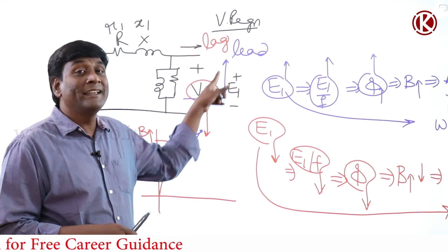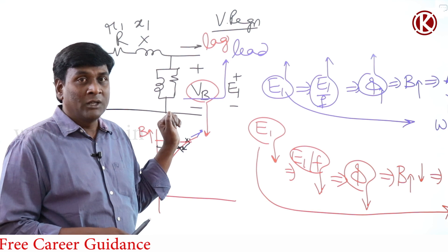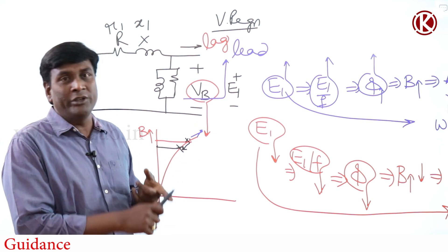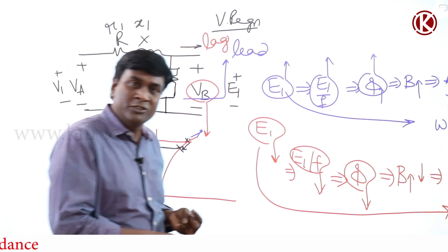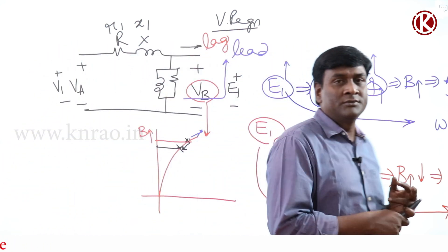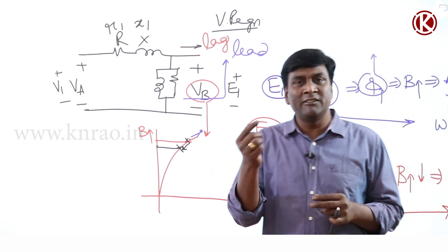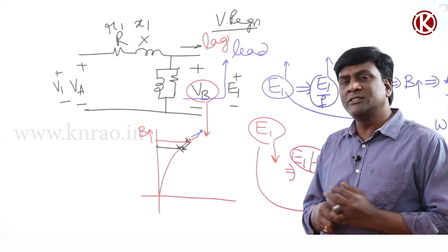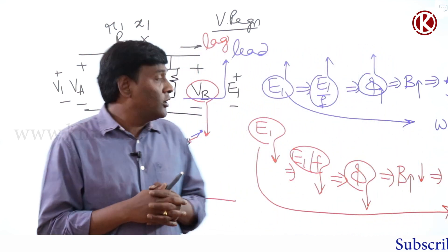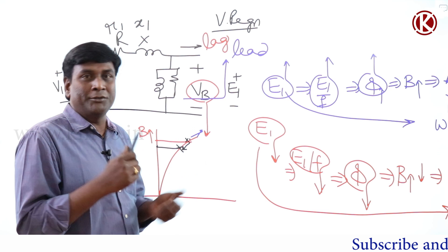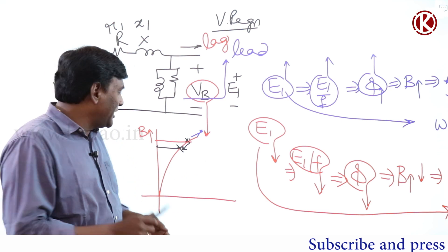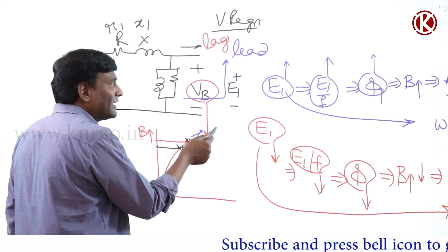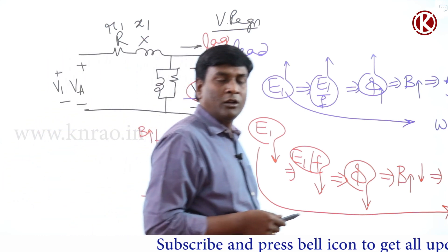To be precise: core loss will increase at leading power factors. At leading power factors, E1 increases, E1 by F increases, Bmax increases, area of BH increases, hysteresis losses increase. Eddy current loss, which is independent of frequency, is decided by voltage only — so when voltage magnitude increases, eddy current loss increases and total core loss increases. Also, R0 and X0 values will reduce because at leading conditions we are moving towards the non-linear region.